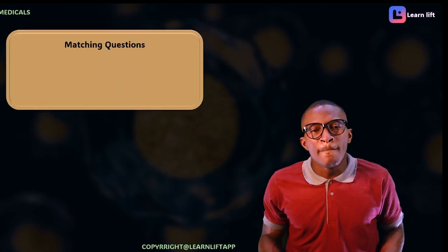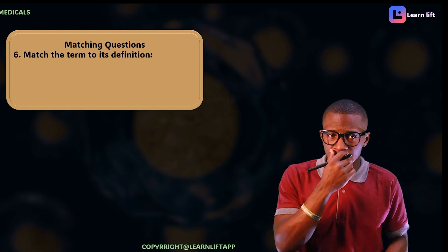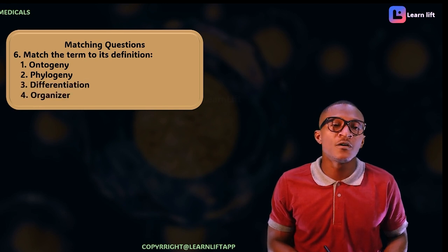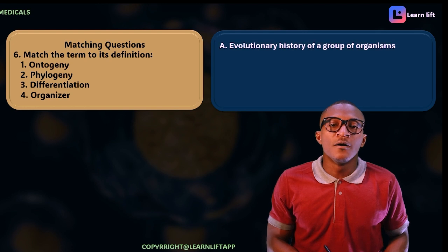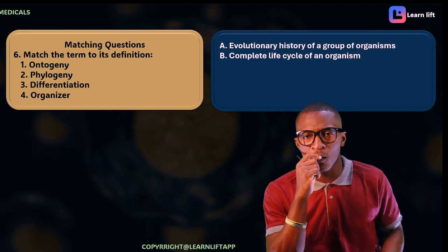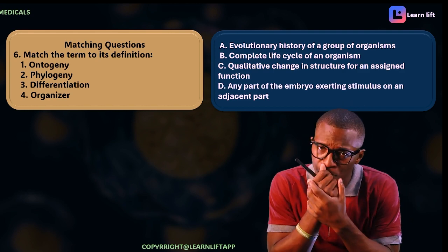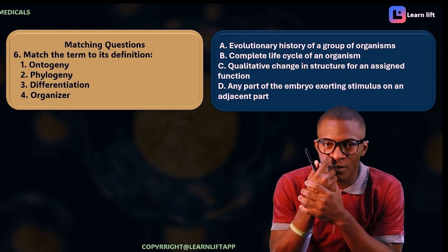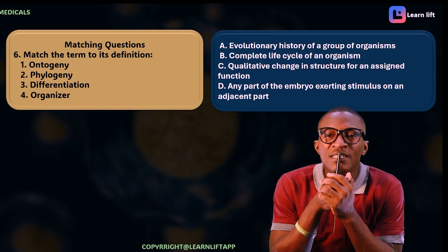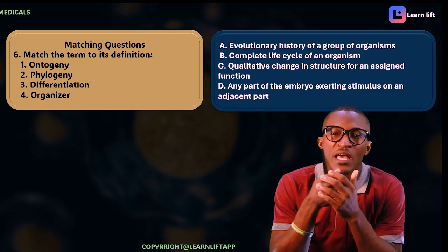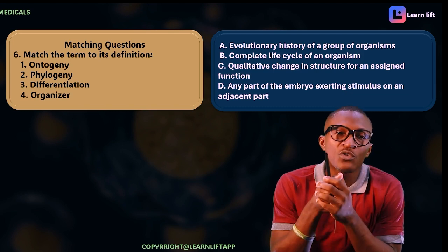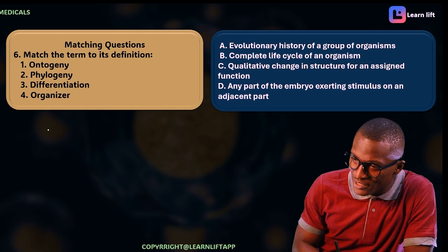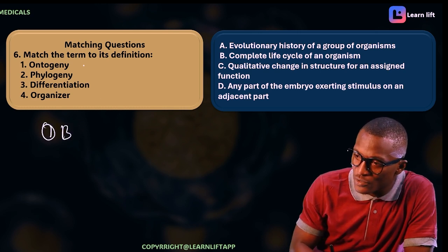Now a matching question. Match the terms to their definitions. Terms: ontogeny, phylogeny, differentiation, organizer. Definitions: evolutionary history, complete life cycle, qualitative changes in structure for an assigned function, any part of the embryo that stimulates adjacent parts. Ontogeny — let's look at it — ontogeny relates to the complete life cycle of an organism, so number one matches to B.